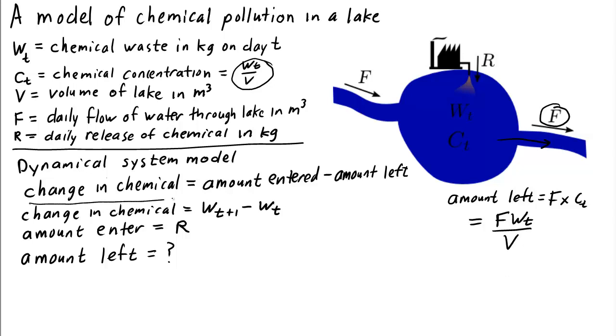Putting these all together, we get that the dynamical system is therefore w t plus 1 minus wt, the change in the chemical, is equal to r, the amount that entered, minus f times w sub t over v, the amount that left the lake in one day. And this will be true for t equals 0, 1, 2, etc., every day.